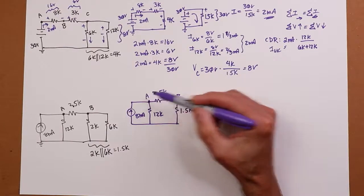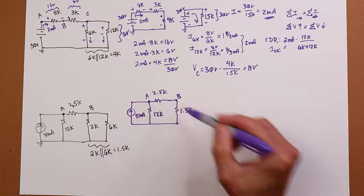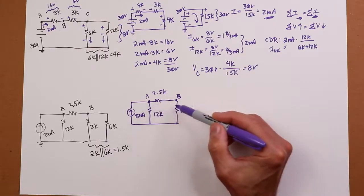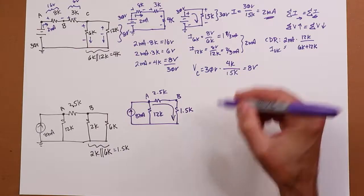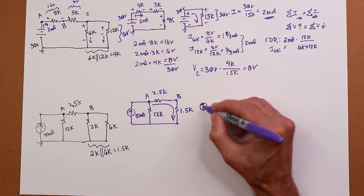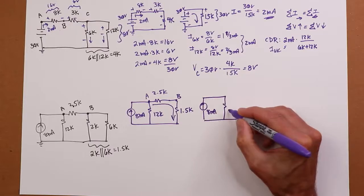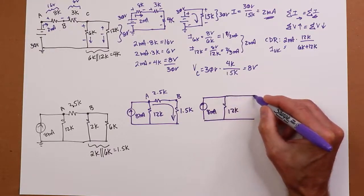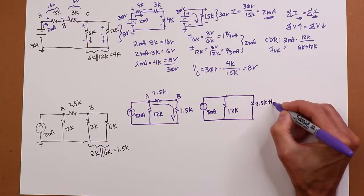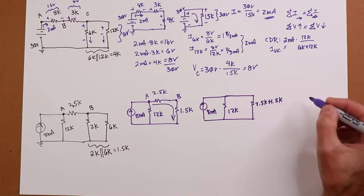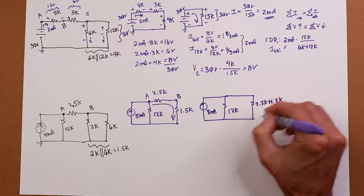Now, ask yourself that question again. What's obviously in series or parallel? And, hopefully, you notice that the 2.5 and the 1.5 are in series. Whatever the current is flowing through the 2.5, that same current has to flow through the 1.5. So, we could make another equivalent circuit. And, if you're looking ahead, you might notice something else. So, anyway, the 2.5 and the 1.5 is going to get us 4K.